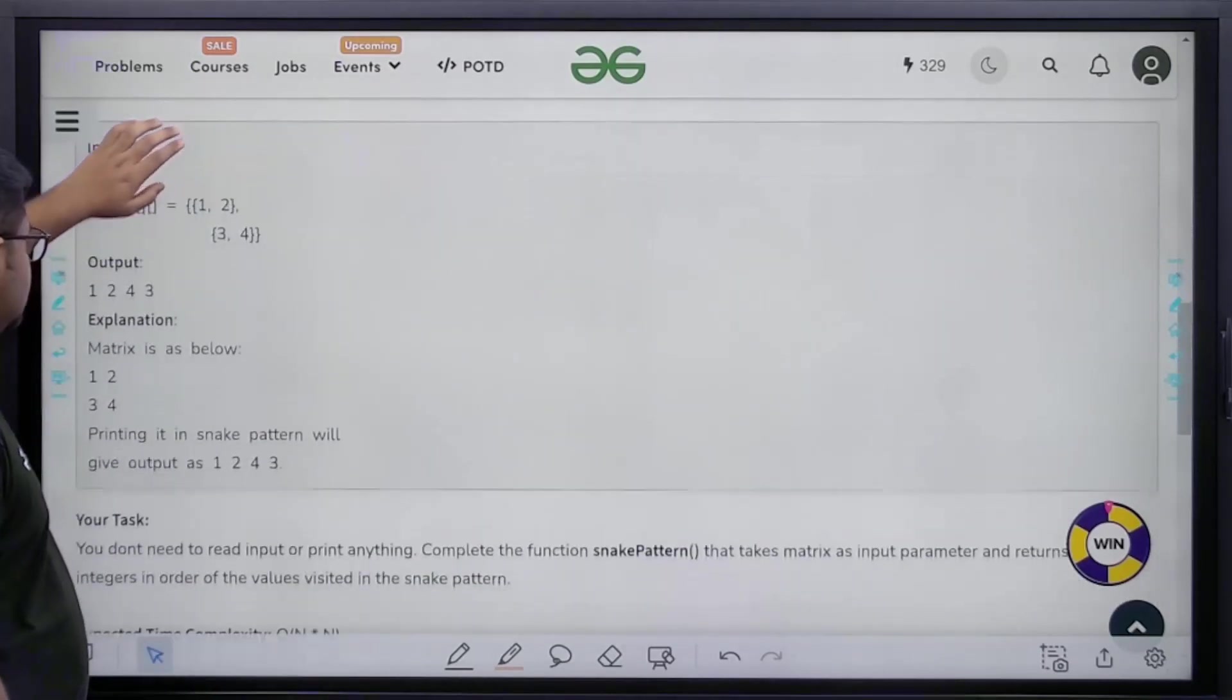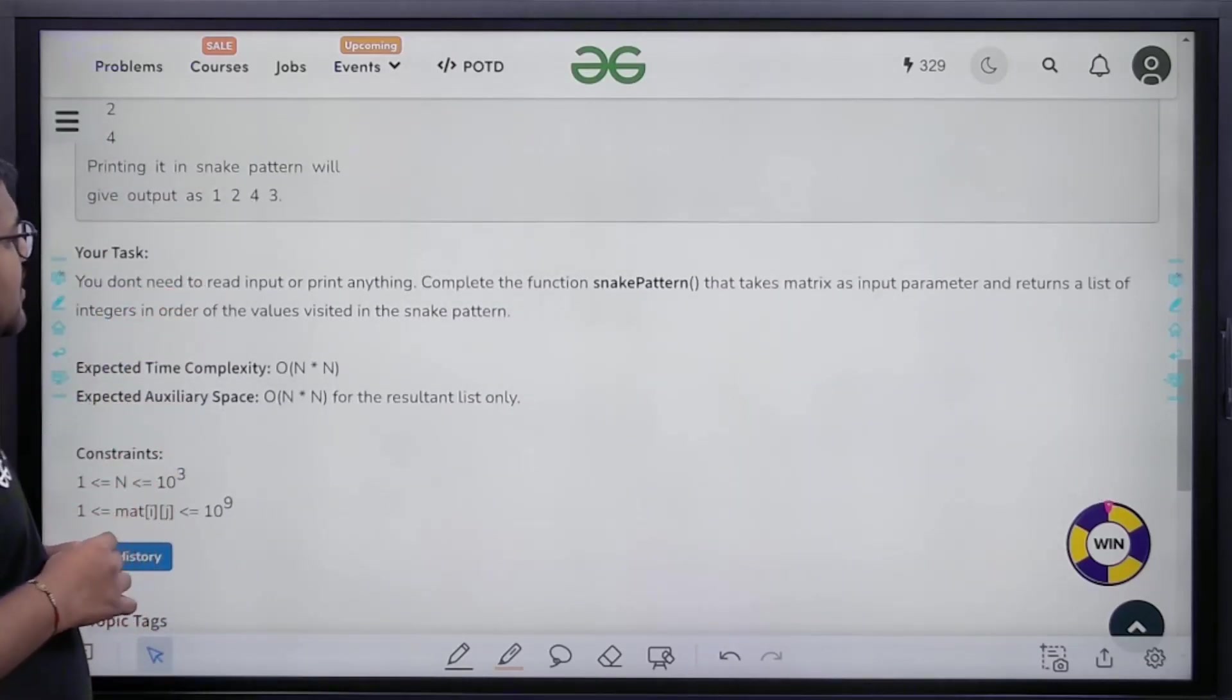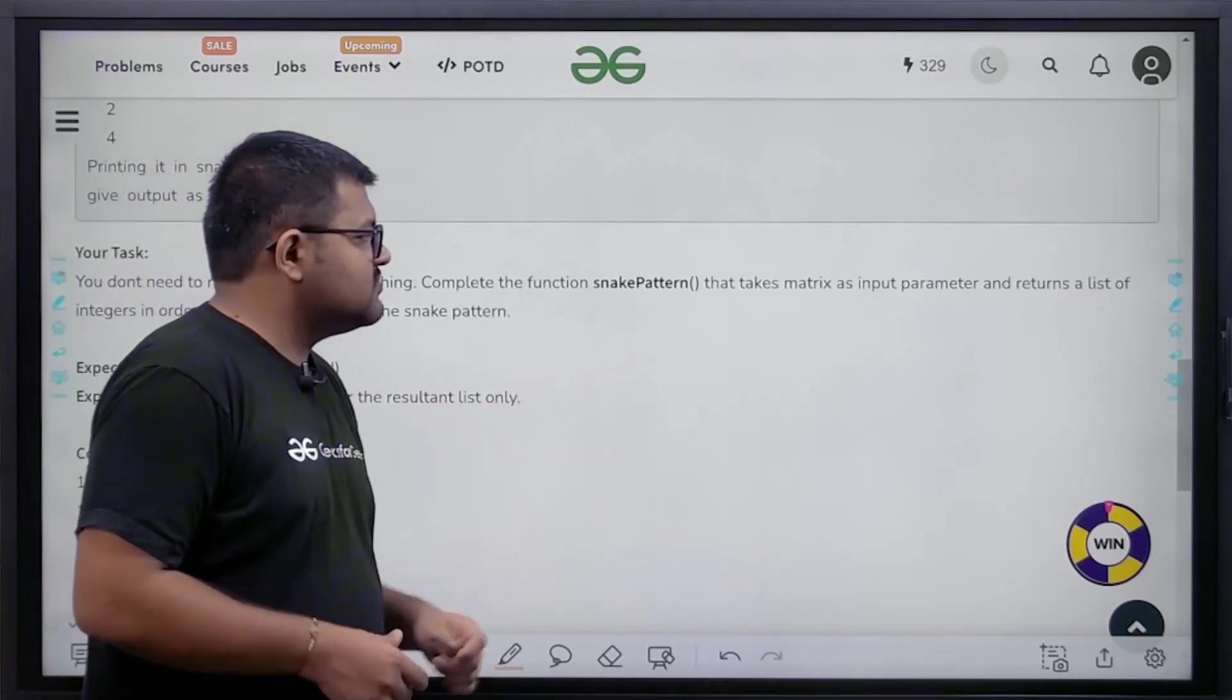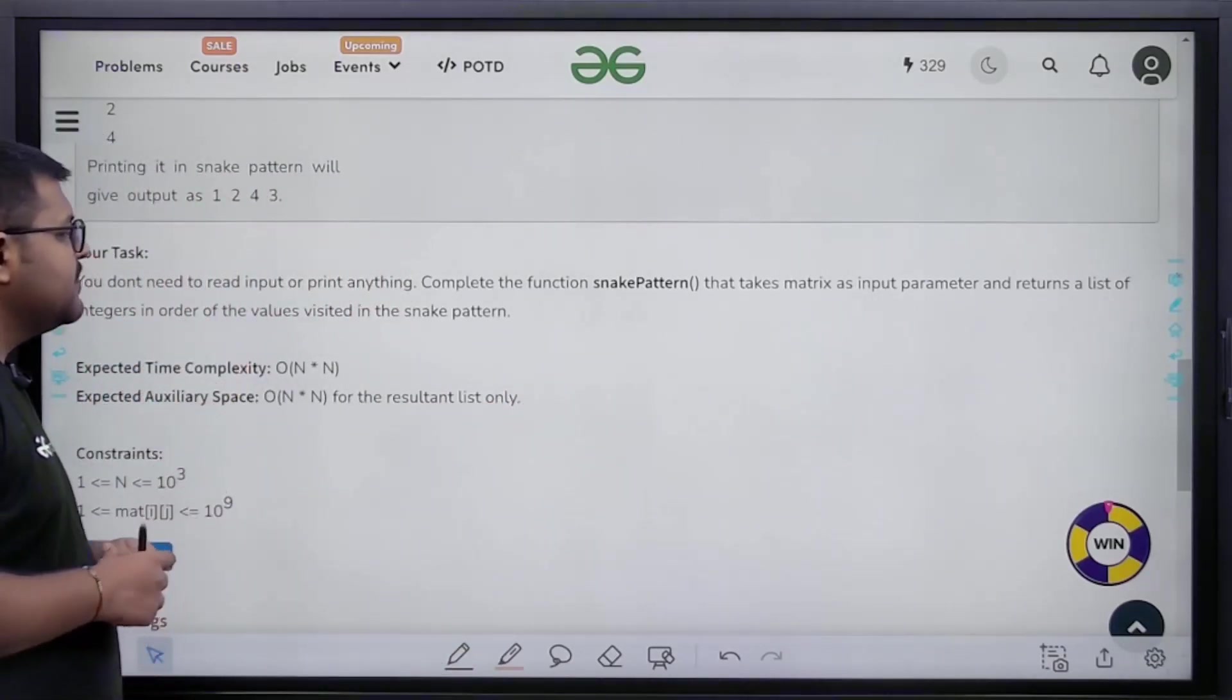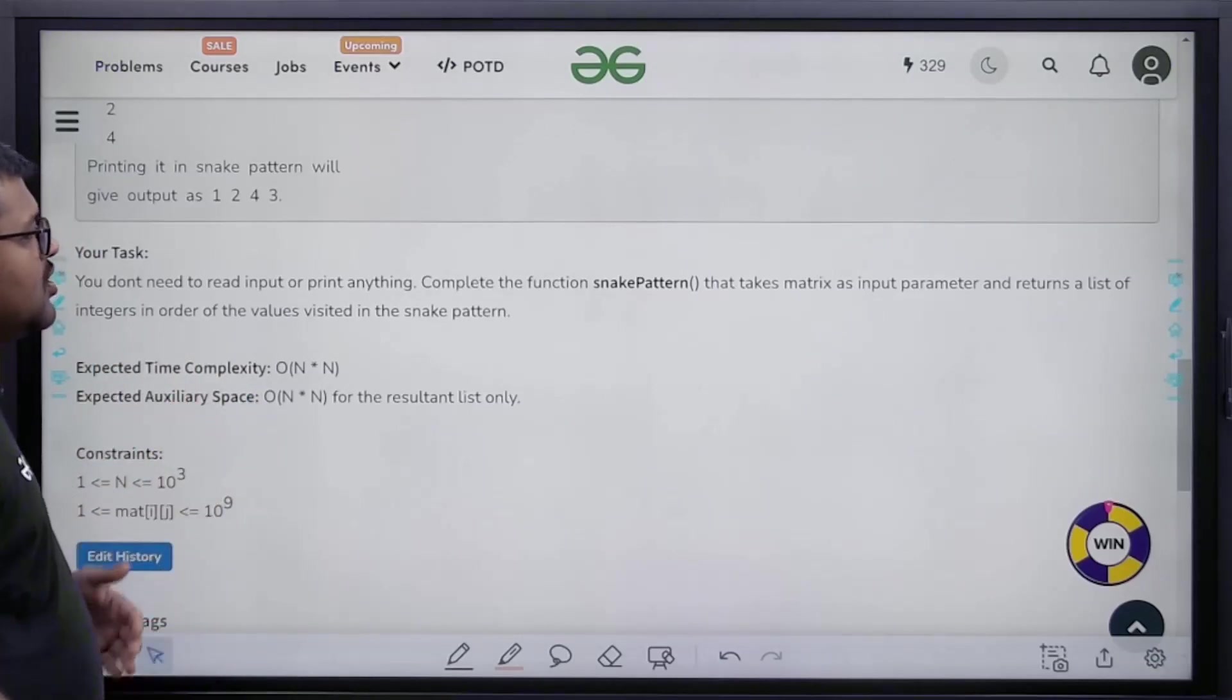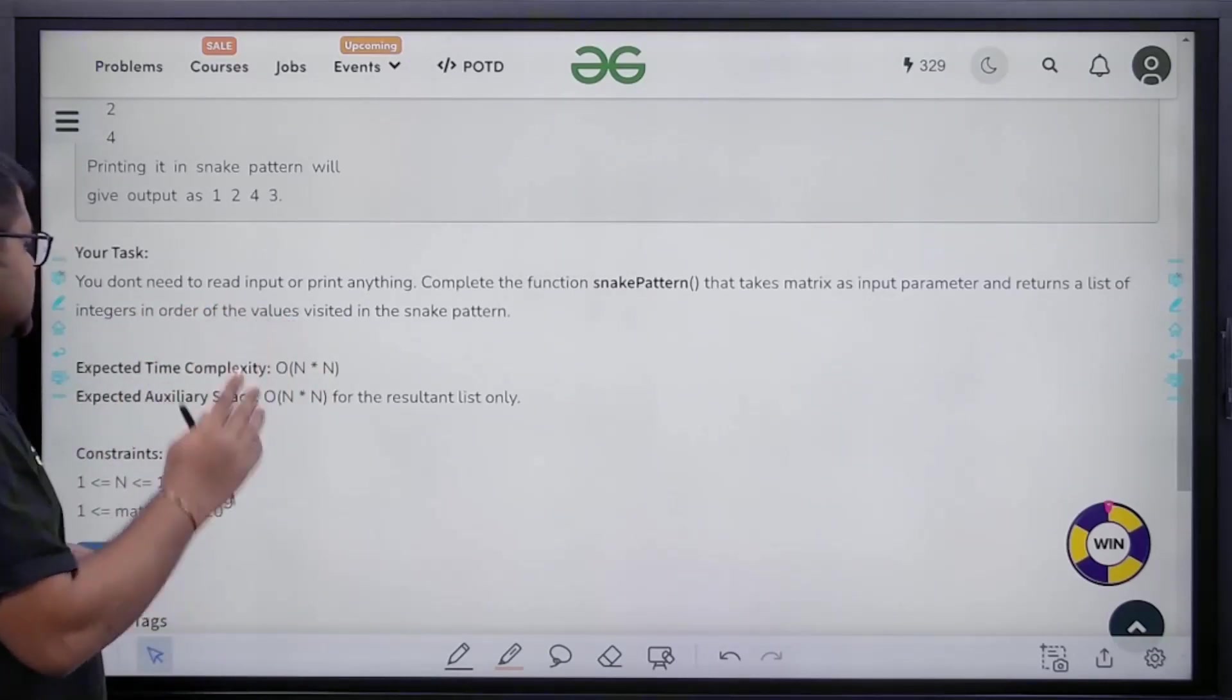You can read the explanation here. Complete the function snake pattern that takes matrix as input parameter and returns a list of integers in order of the values visited in the snake pattern. We need to return one list which will contain the values of the matrix visited in snake pattern.